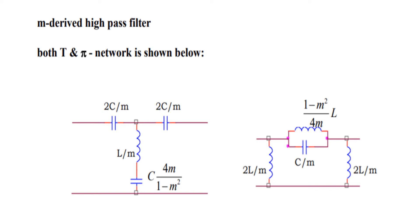In the pi network, inductance and capacitance are both in parallel in the series arm. The value of inductance is (1 - M²) / (4M) into L, and capacitance is C/M. In the shunt arm, two inductances are 2L/M and 2L/M.